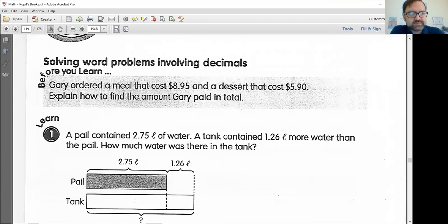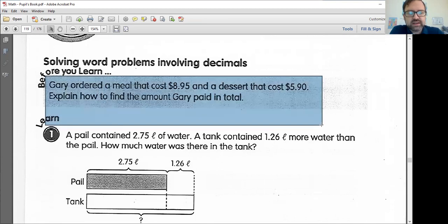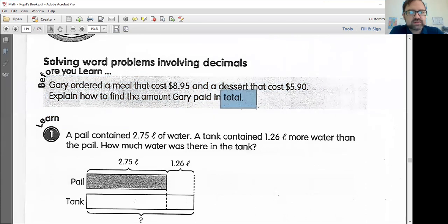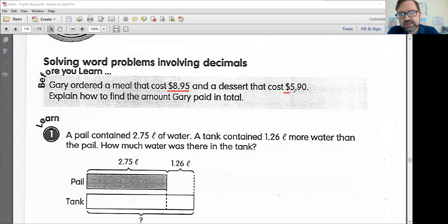Here's one. It says, Gary ordered a meal that cost $8.95 and a dessert that cost $5.90. Explain how to find the amount Gary paid in total. So if I was going through this, I would first off, I would just get all this information. I'm going to underline $8.95. That seems relevant. Same with $5.90. And then these other words here explain how to find the amount Gary paid in total. This means this and this. And so this tells me I'm doing an addition problem.